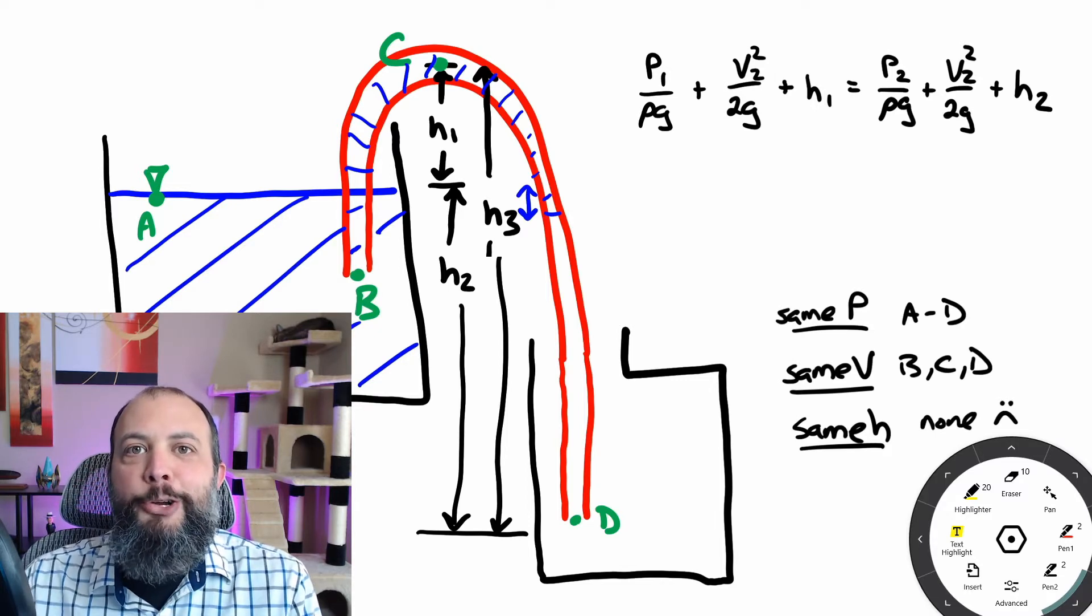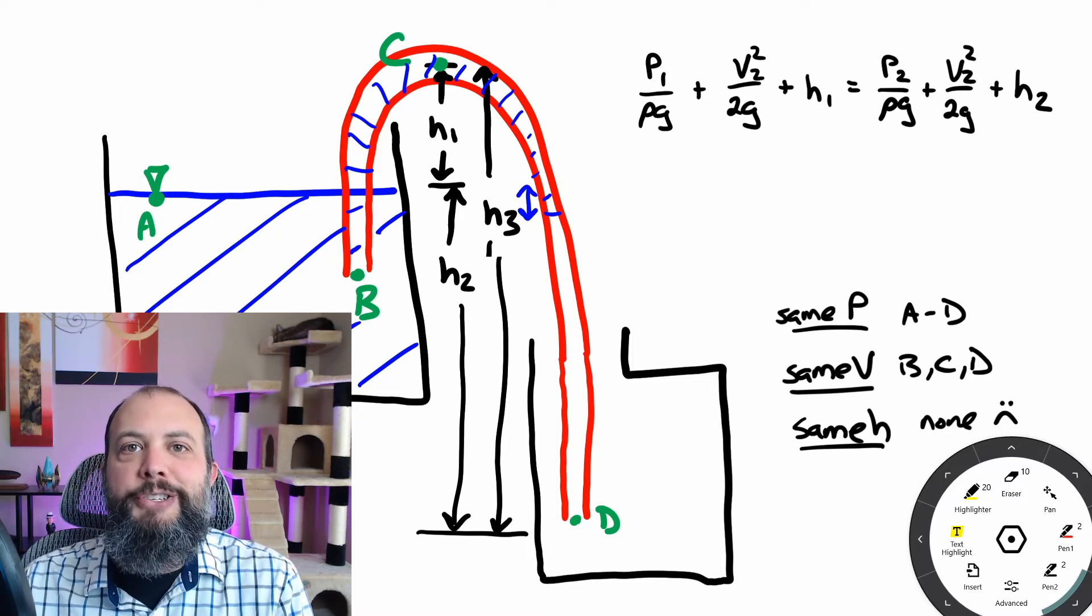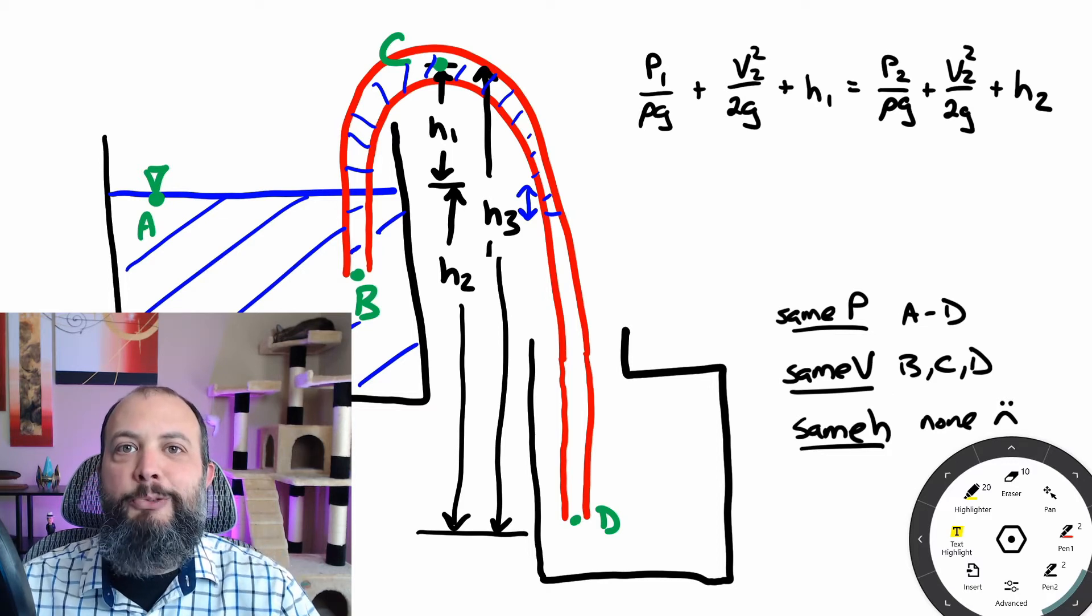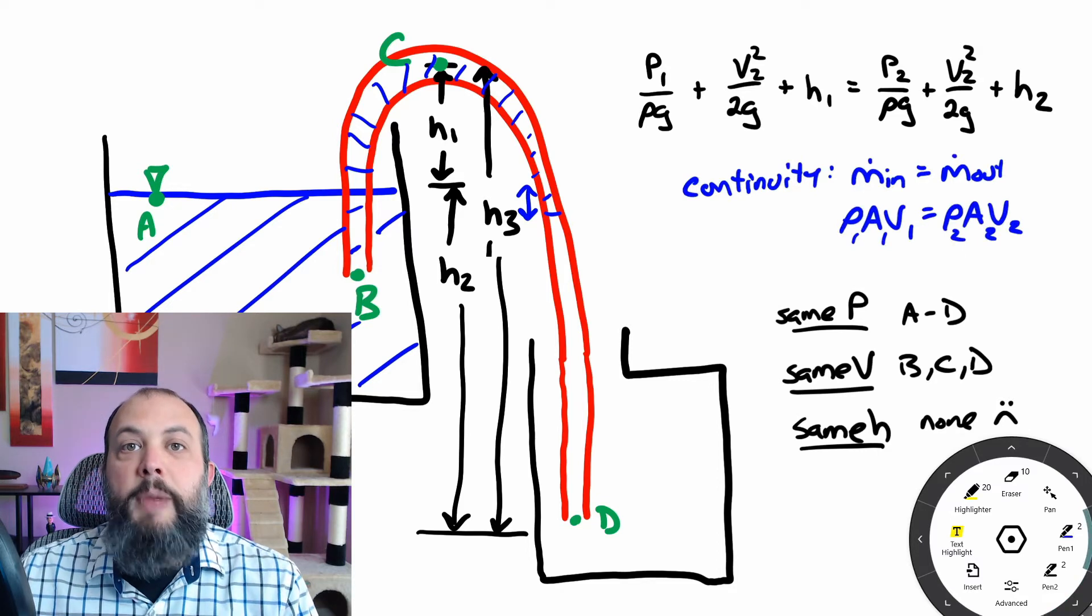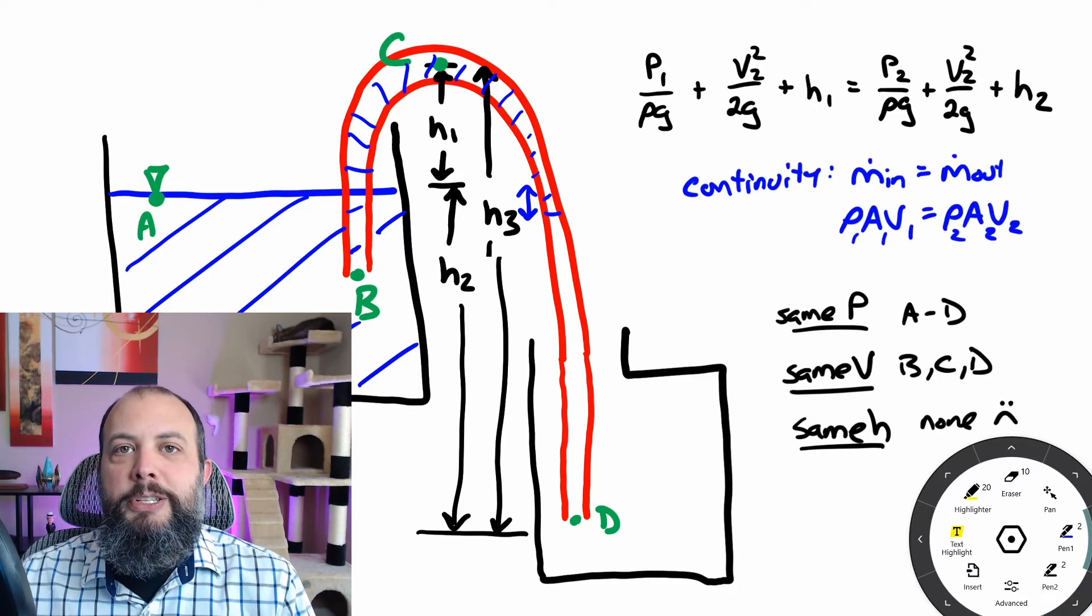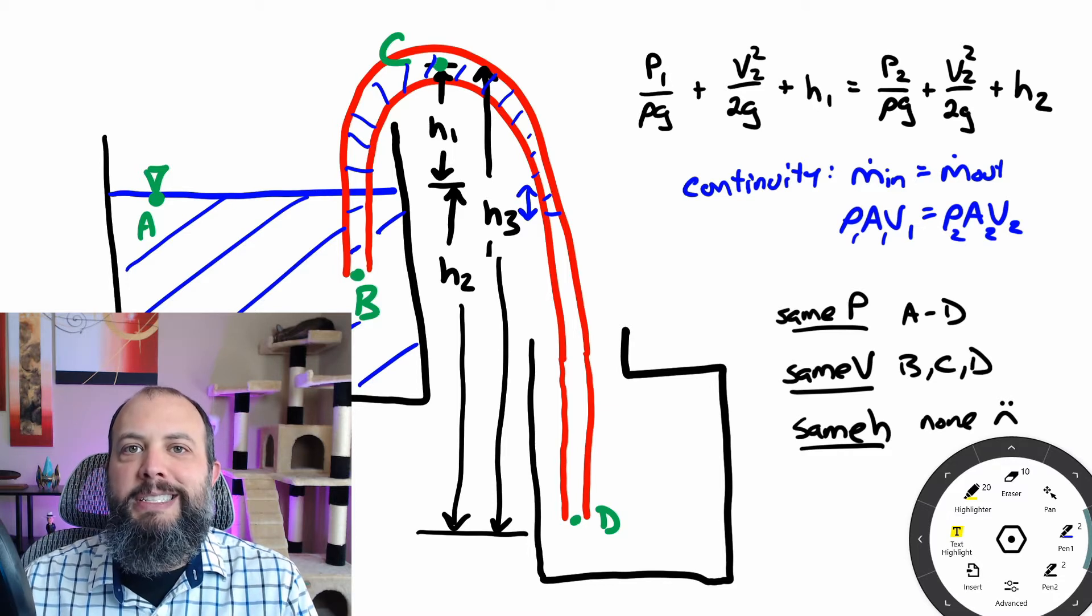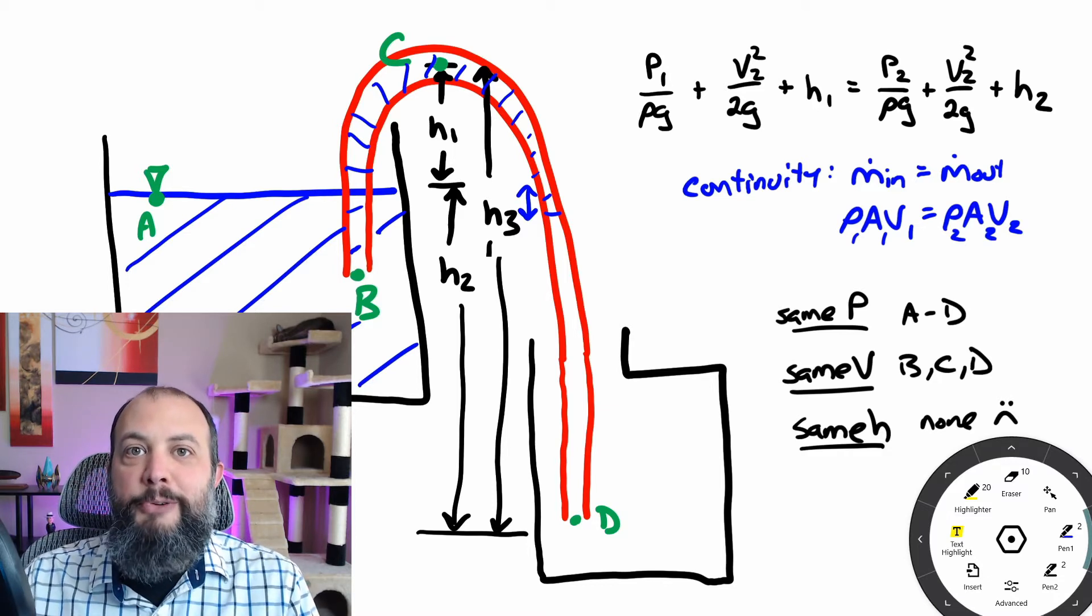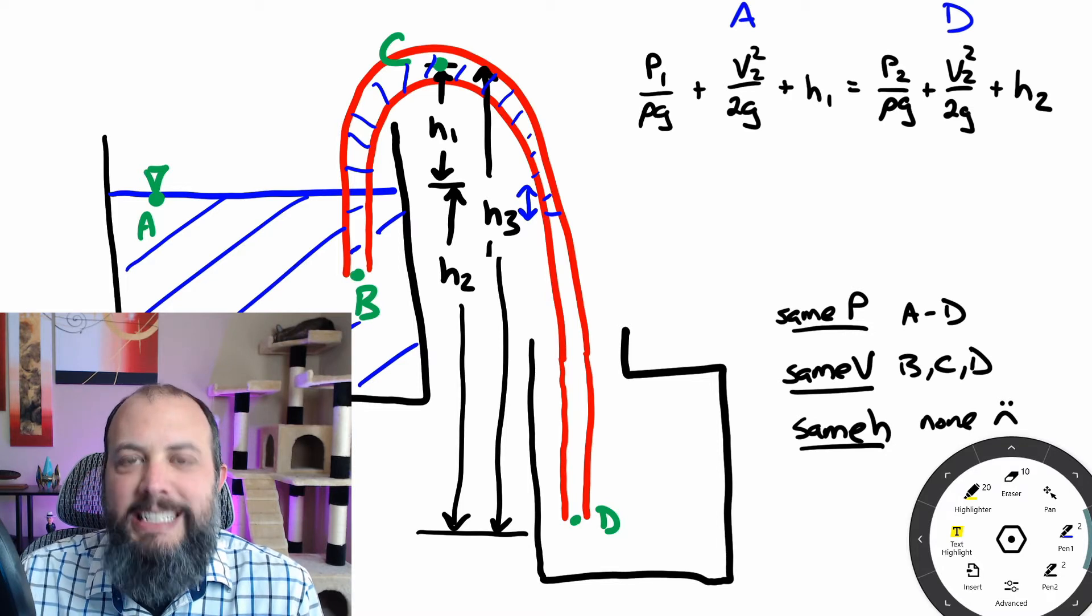And that's where the continuity equation comes in. So the continuity equation is essentially a version of the conservation of mass, says that the same mass entering a control volume has to equal the same mass exiting, as long as there's no accumulation. So for the mass flow rate to be the same, as long as the fluid has the same density at both ends, and as long as both ends have the same cross-sectional area, then you get the same velocity. So that's why for a constant diameter hose, you'll get the same velocity at all three points along the hose.